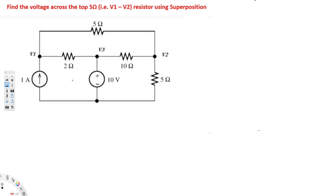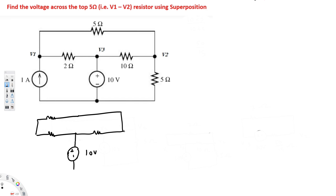When we have a current source we remove it, and when we have a voltage source we short circuit it. So the first step is to remove the current source and open the circuit. The resulting circuit has a 10V voltage source, a 10 ohm resistor, a 5 ohm resistor, a 2 ohm resistor, and another 10 ohm resistor.